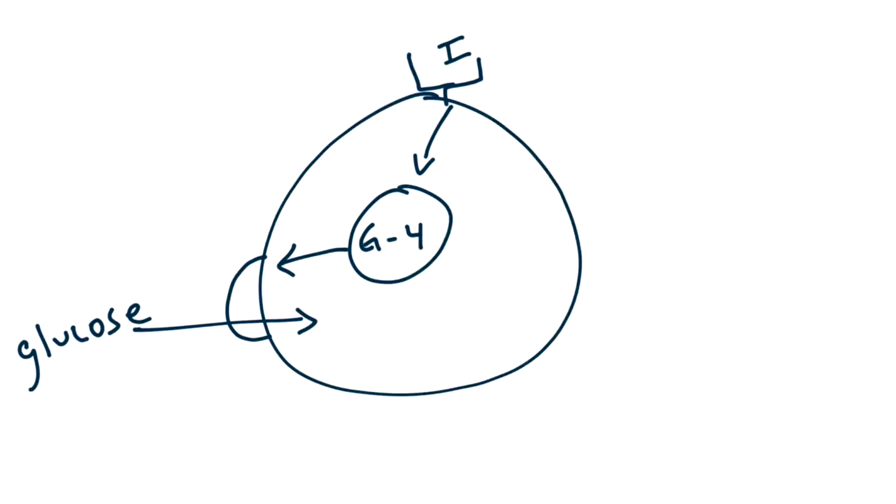Aside from insulin, what else increases the translocation of GLUT4 vesicles to the cell surface? Exercise. This is an important insulin-independent way of lowering blood sugar, and it's actually incredibly effective at preventing and treating diabetes.